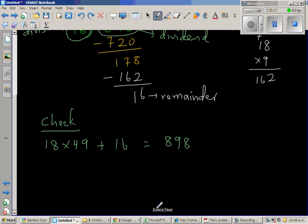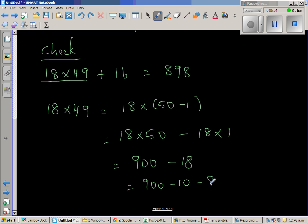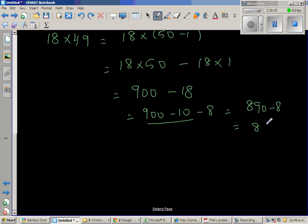18 times 49 - using BODMAS of course, you have to multiply first and then add. 18 times 49 is same as 18 times 50 minus 1, which is 18 times 50 minus 18 times 1. 18 times 50 is 900, or 18 times 5 is 90. So this is 900 minus 10 minus 8, which is 890 minus 8, which is 882 plus 16, which is 898.